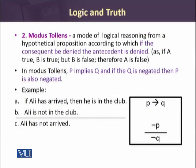Modus Tollens is again an argument in the same shape as we have seen previously. It is a mode of logical reasoning from a hypothetical proposition according to which if the consequent is denied, the antecedent is also denied. That means if A is true, B is true; but if B is false, then A is also false. In Modus Tollens: P implies Q, and if Q is negated, then P is also negated. Example: 'If Ali has arrived, then he is in the club.'